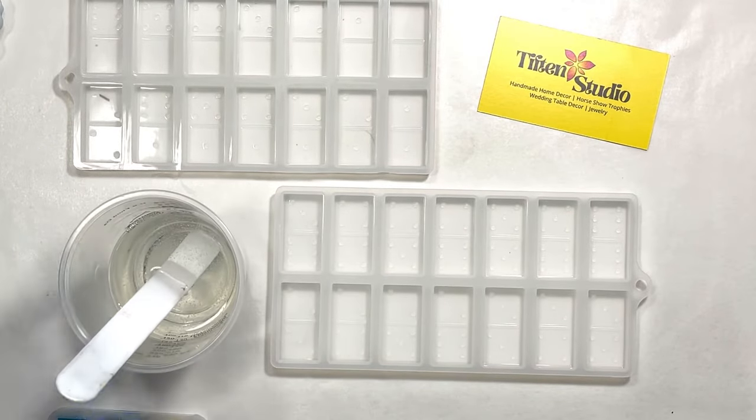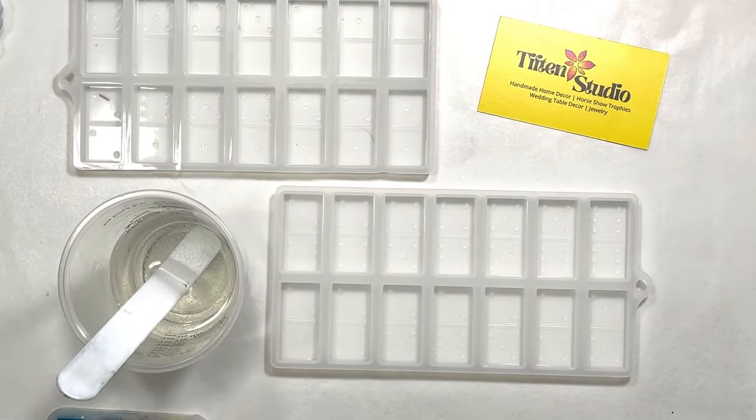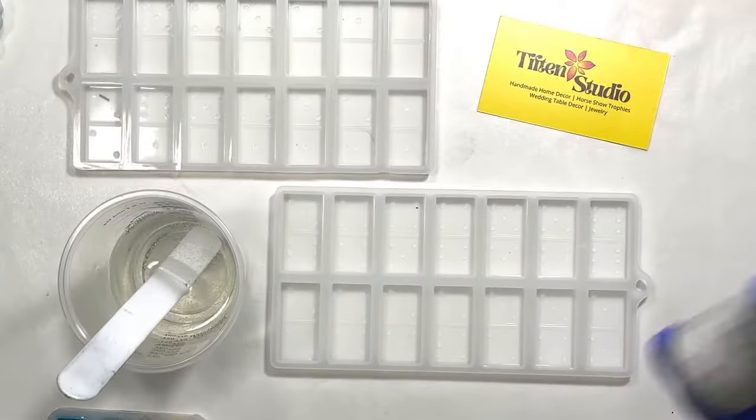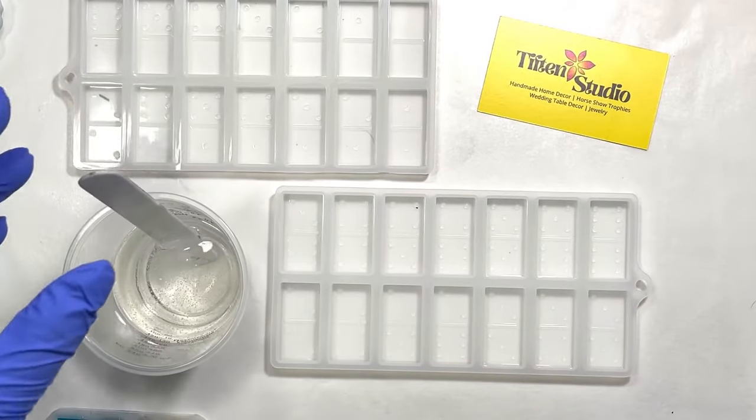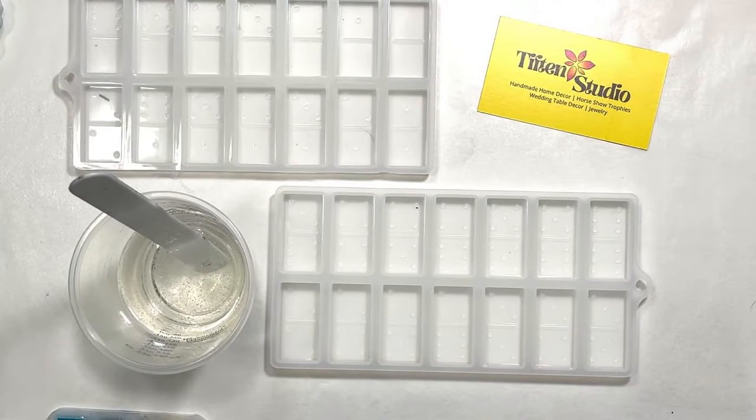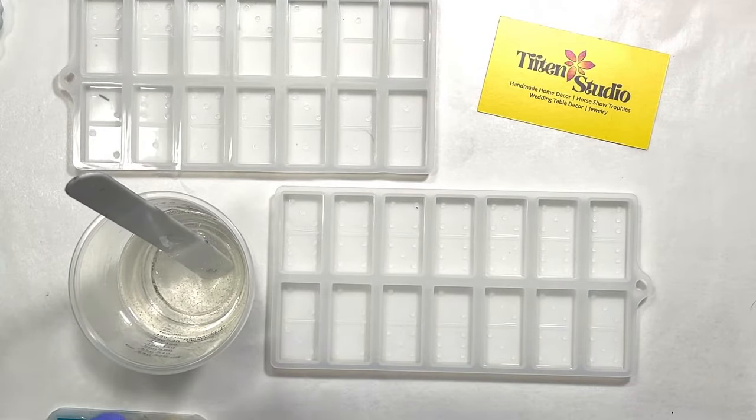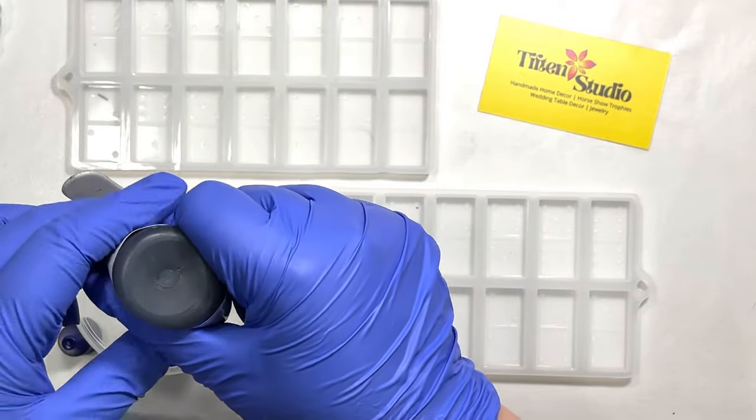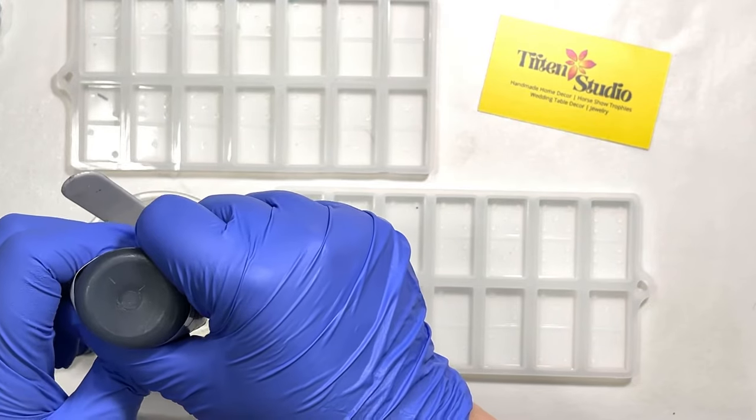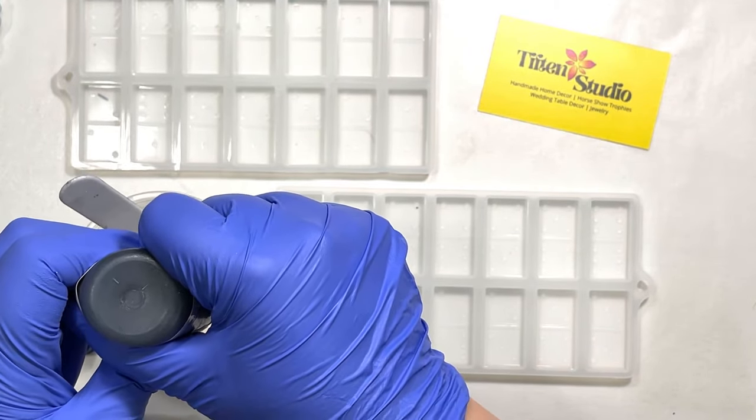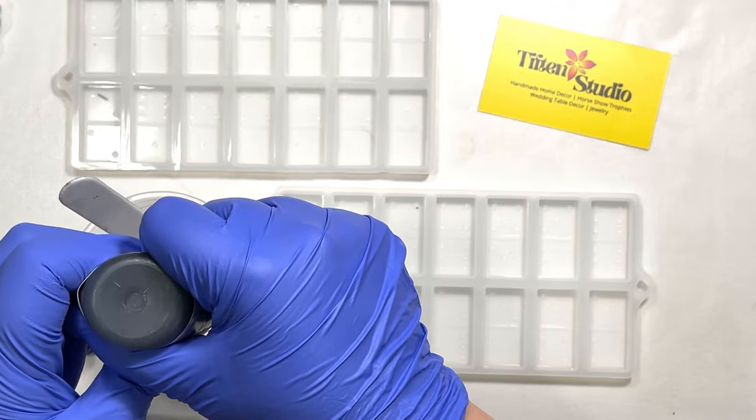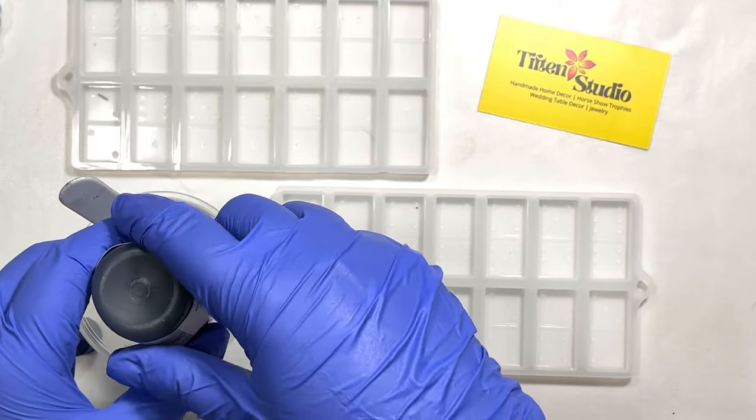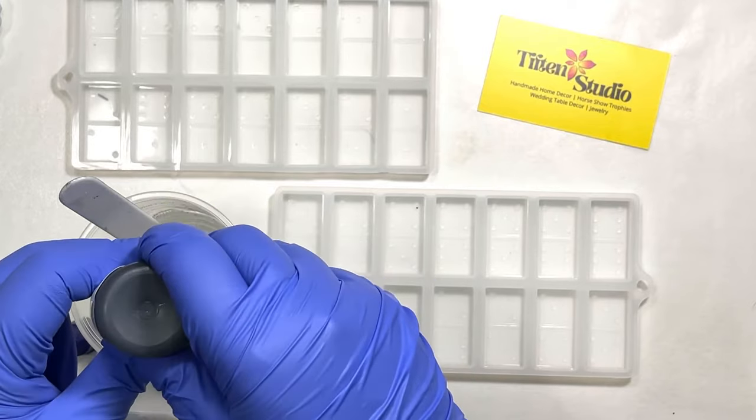For the black I'm going to use the Armor Art black pigment paste. Let's see, four ounces, I'm going to start with 10 drops and just see what we get from that. I want this to be very opaque, I don't want it to be transparent at all. And this Armor Art paste is very thick, it's hard to squeeze out of here.